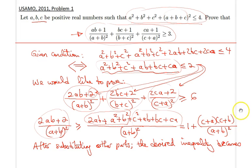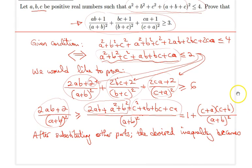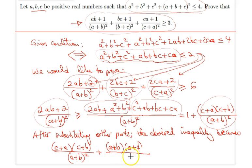I would like to make use of the space underneath, so I'll just drag the thing a little bit here. So the desired inequality becomes c plus a times c plus b divided by a plus b squared plus a plus b times a plus c divided by b plus c squared plus finally b plus c times b plus a divided by c plus a squared. And I have three ones here that I removed, so therefore we would like to show that this expression is greater than or equal to 3.